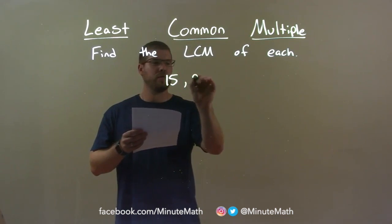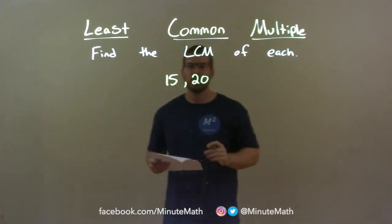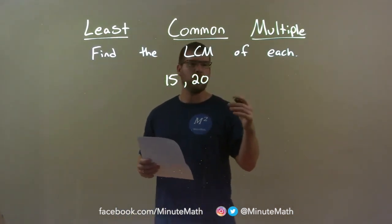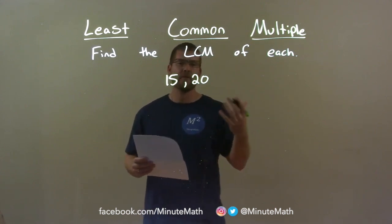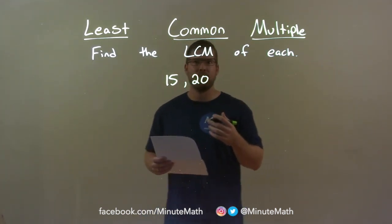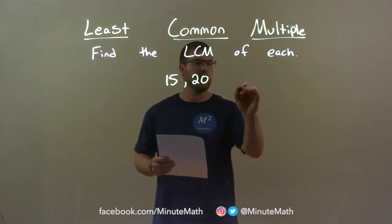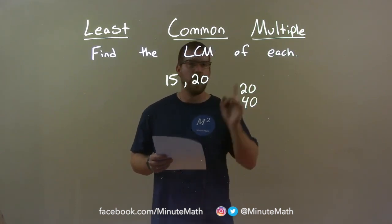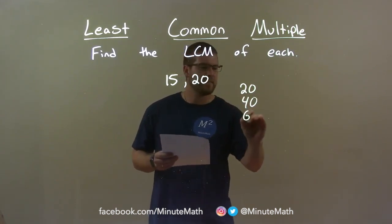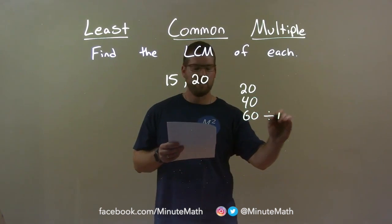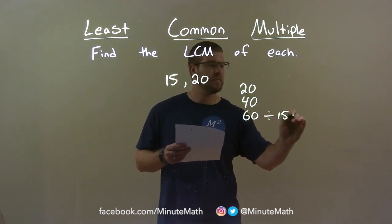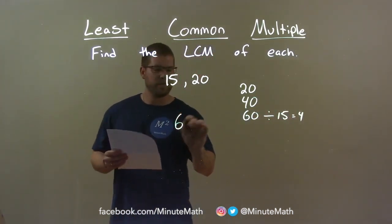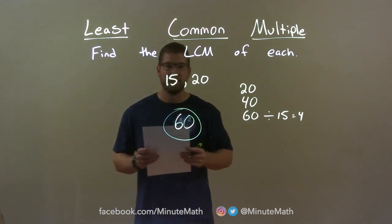15 and 20. I take the larger of the two numbers, 20, and go through the multiples of 20 to find the first one that is also divisible by 15. 20 is not divisible by 15, and neither is 40. But 60 is. 60 divided by 15 is 4. So 60 is my magic number and my final answer.